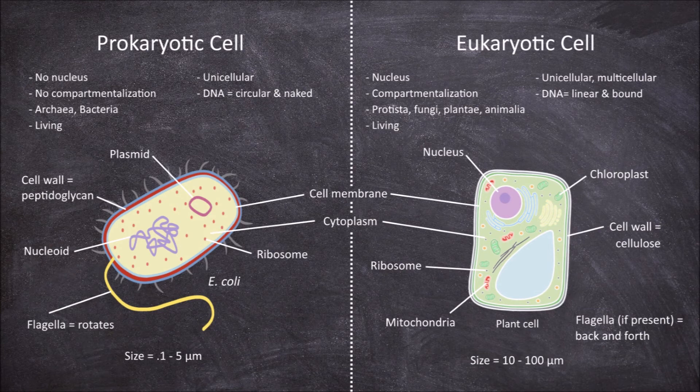Both groups have ribosomes. In both, they consist of two subunits and function in the synthesis of proteins during translation. They do differ in size between eukaryotes and prokaryotes. In prokaryotes, ribosomes are smaller at 70S, and in eukaryotes they are larger at 80S.